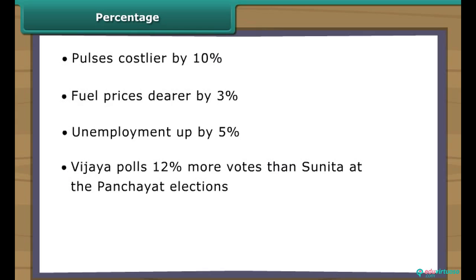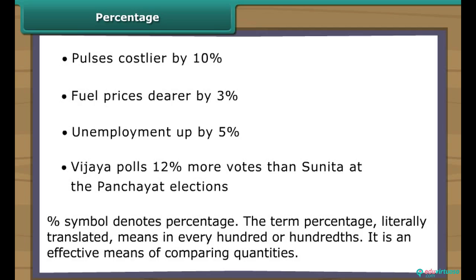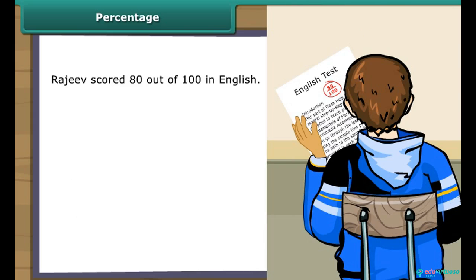One common element in all these headlines is that they all indicate comparison of quantities. Another element common in them is the use of the percentage symbol. The term percentage literally means in every hundred or hundredth. It is a means of comparing quantities. For example, Rajiv scored 80 out of 100 in English; his score can be expressed as a fraction 80 by 100.